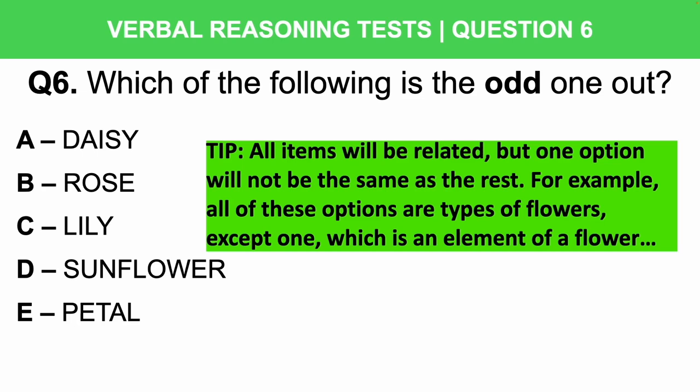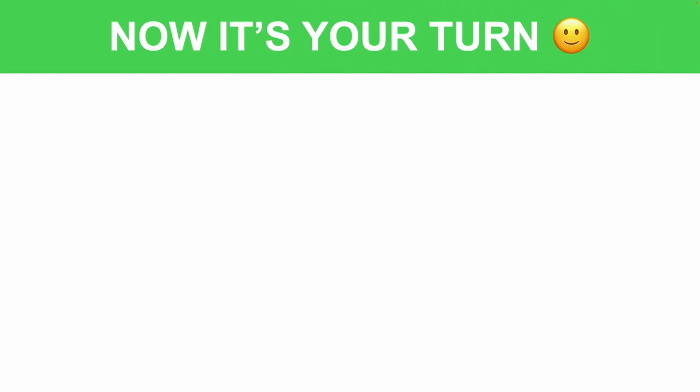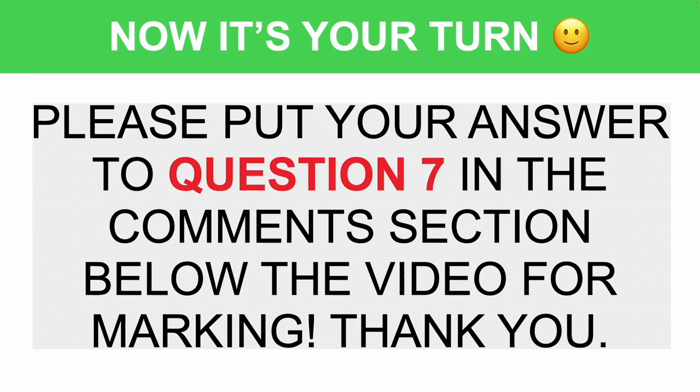Now I want you to have a go at a few of these questions under timed conditions. Please put your answers in the comment section below for marking. Question 7: Which of the following is the odd one out? Is it A: Jog, B: Run, C: Sprint, D: Sit, or E: Walk? You have 12 seconds on the timer starting now.